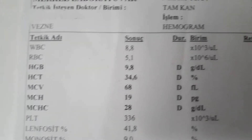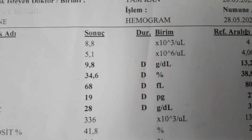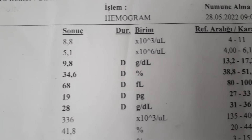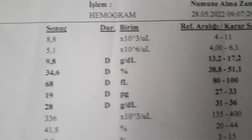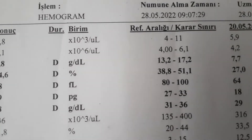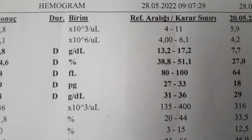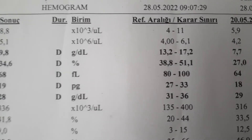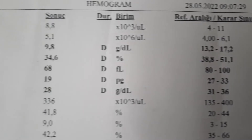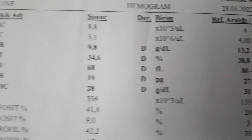Apart from erythrocytosis, congestive heart failure, COPD, fibrosis in the lung, kidney diseases, some kidney tumors, certain drugs, and those living at high altitudes or mountain villages may also increase the RBC level. If RBC is low, it means you may have anemia.